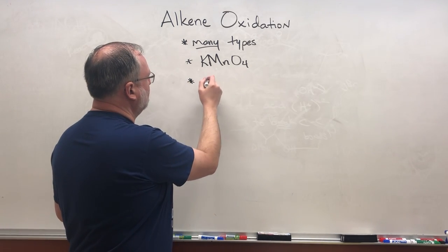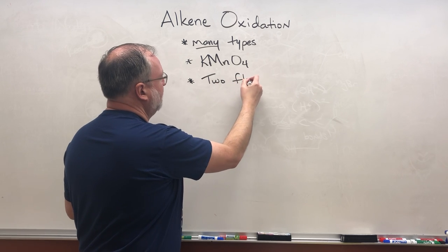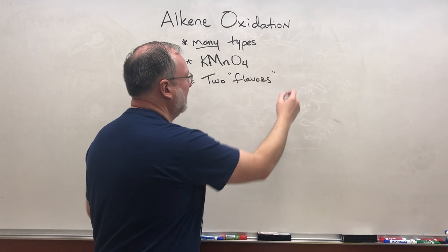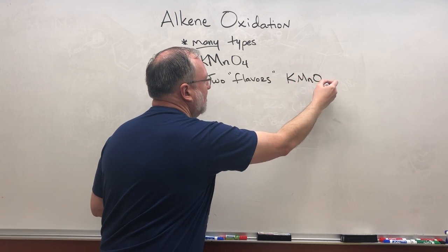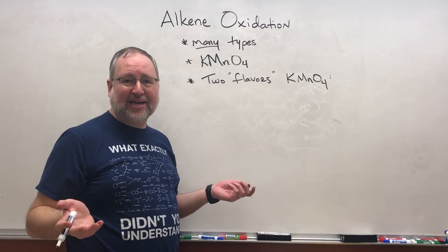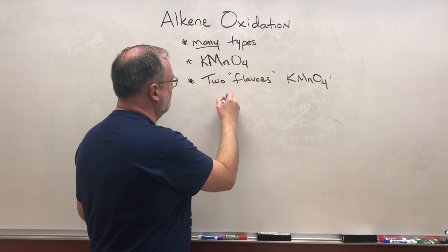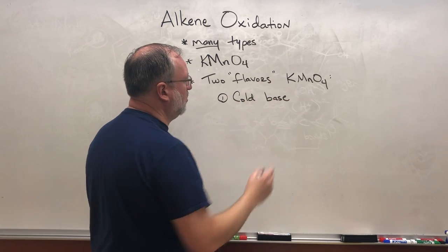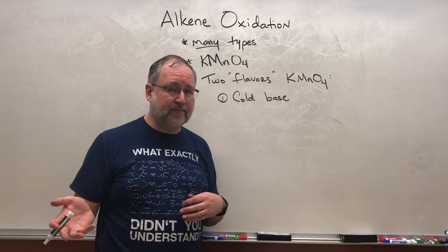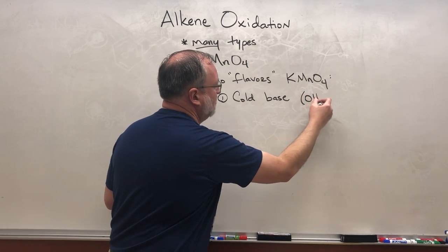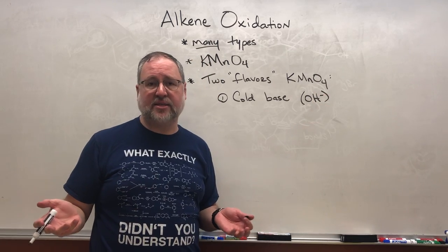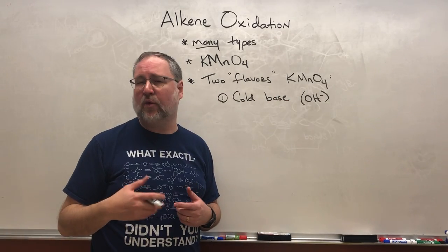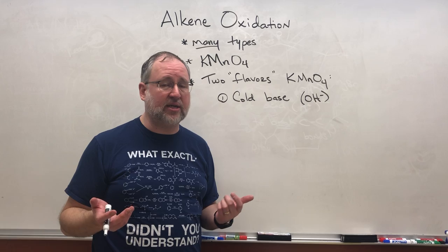Even for potassium permanganate there are two different flavors of potassium permanganate alkene oxidation and I'm gonna ask you to learn both of them. The first one is in the presence of cold base. So if you use base, sometimes we just write OH minus to indicate the presence of hydroxide ions. If you use base and keep the reaction pretty cold, the potassium permanganate acts as sort of a weak oxidizing agent and what you'll get as a product is some alcohols.